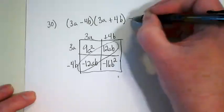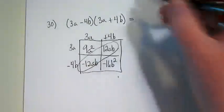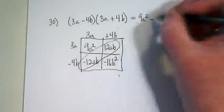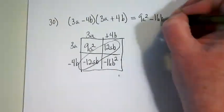That means that the only two terms that are left is 9a squared minus 16b squared.